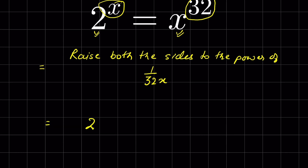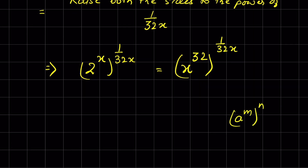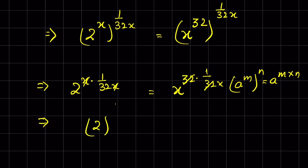2 raised to the power x, whole raised to the power 1 upon 32x, is equal to x raised to the power 32, whole raised to the power 1 upon 32x. Now when a raised to the power m, whole raised to the power n, this equals a raised to the power m times n. So this becomes 2 raised to the power x times 1 upon 32x, equal to x raised to the power 32 times 1 upon 32x. We can cancel 32 with 32, and x with x on the left-hand side, giving us 2 raised to the power 1 upon 32, equal to x raised to the power 1 upon x.